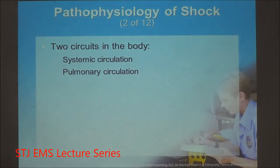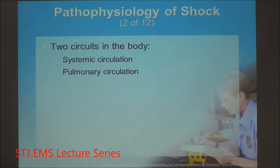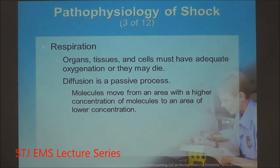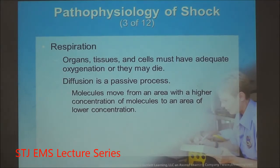There are two circuits in the circulatory system. Systemic circulation sends oxygenated blood down to the tissue. Pulmonary circulation is governed by the right side of the heart, which pumps deoxygenated blood rich with carbon dioxide back to the lungs for exhalation. The process of breathing is known as ventilation; the process of gas exchange at the tissue is known as respiration.